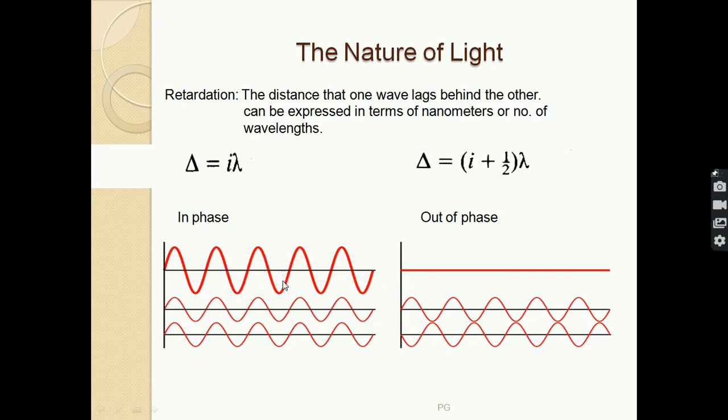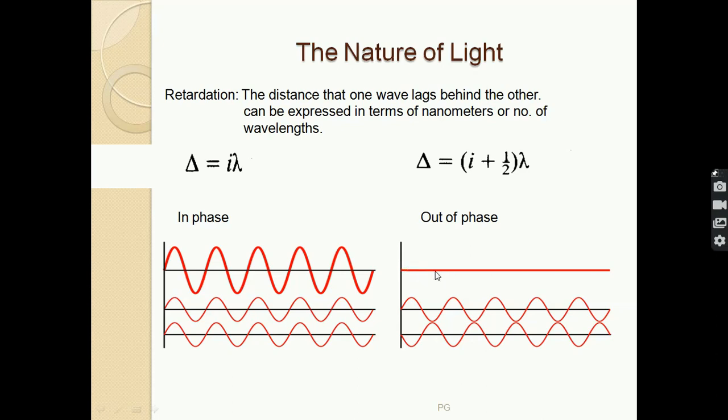And when they are out of phase they cancel out each other. Like in this case, the waves are out of phase and when they produce interference, the resultant wave will have zero amplitude.